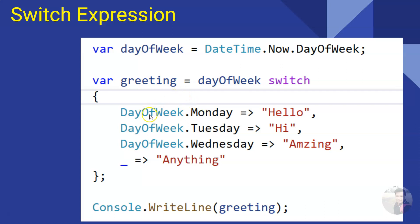You can see that these are cases, like `DayOfWeek.Monday`, `DayOfWeek.Tuesday` — similar to the case labels in a switch statement — and these are the return values: 'hello', 'hi', and so on. The return type has to be the same; you cannot return both string and integer together. Now let us see a comparison between switch statement and switch expression.